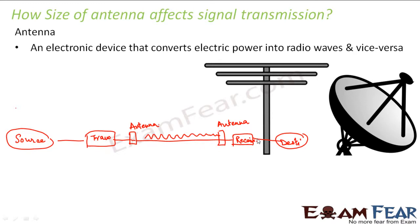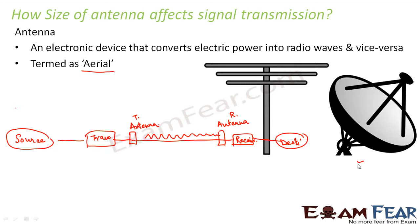The antenna sends radio waves to distant sites and also receives radio waves from sources. The transmitting antenna sends radio waves to distant places, and the receiving antenna receives radio waves coming from distant places. It is also termed as aerial — that is another name for antenna. You would have seen this kind of antenna on your rooftops for televisions. However, these days, mostly you have dish antennas.